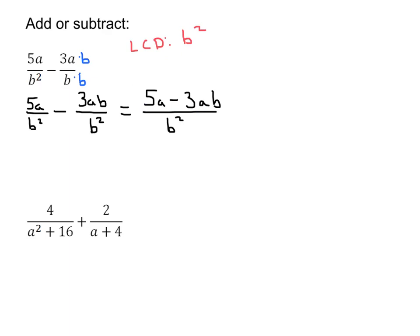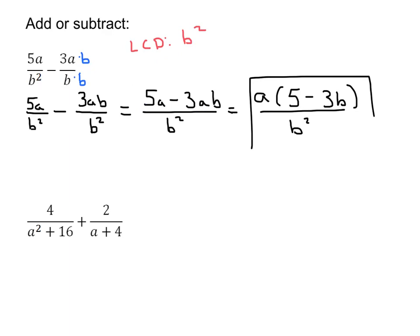We can see that these each have an a in common. We want to try to factor this as far as we can. So we're going to take an a out, and there's going to be 5 minus 3b left over there. On the bottom we're going to have b squared — and that's our final answer for that one.